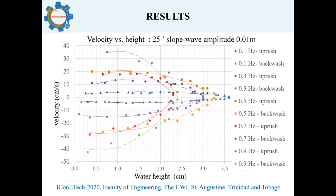Here is an example of the processed velocity results, again for the 25-degree slope and an offshore wave amplitude of 0.01 meters at the same frequencies. These results are plotted as velocity against water height, and they all show an elliptical fit for both the uprush and backwash phases of the swash. All results for both velocity and water heights show these same trends, and are consistent over all 75 conditions conducted in the experiment.